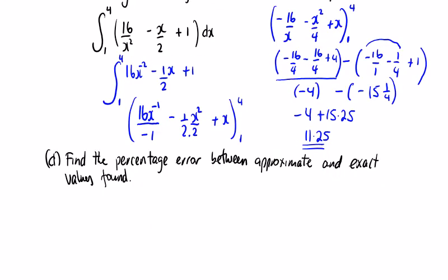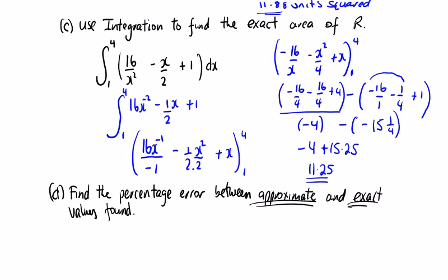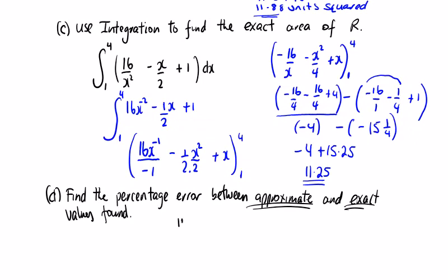So part D, we're asked to find the percentage error between the approximate and exact. So percentage error, the difference between them is going to be 11.88 minus 11.25, divided by what the exact value was, which is 11.25. We're going to multiply that by 100. So percentage error, you probably did in first year. So now you're applying it to an integration question. And if you type this into your calculator, it comes out at 5.6%.